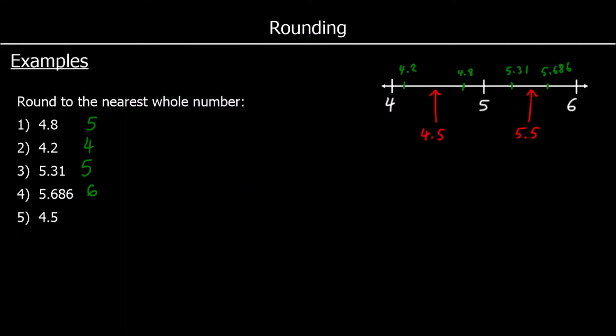Now how about 4.5? 4.5 is exactly halfway between 4 and 5, so how do we pick which way it rounds? The way it's usually done is it rounds up — it rounds away from 0. So 4.5 rounds to 5 even though it is halfway in between 4 and 5. When we've got exactly halfway, we round it up or round it away from 0.